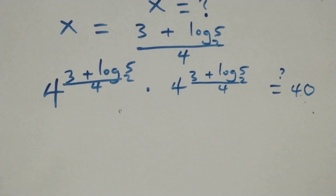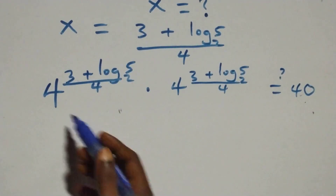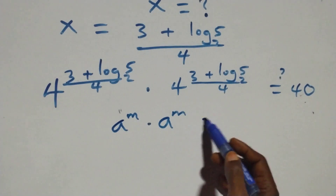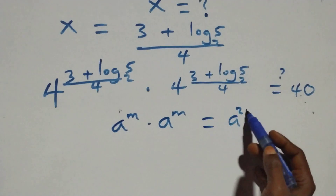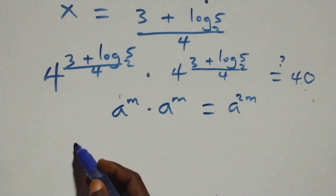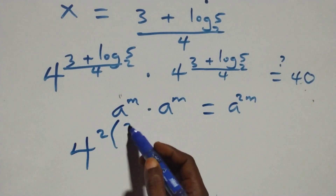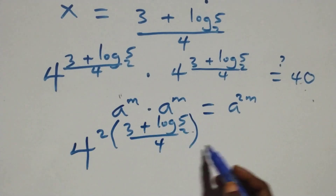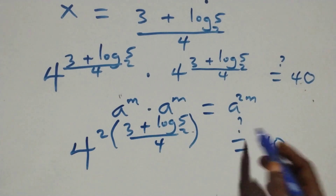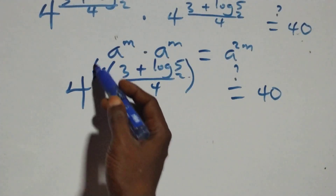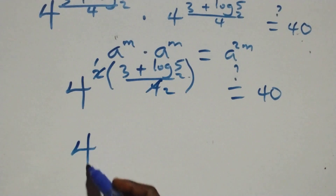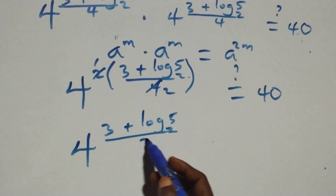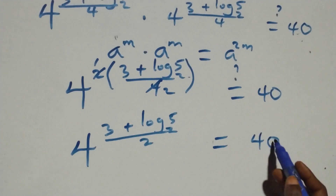Then here we can rewrite this. Same base multiplying: when we have a^m times a^m, this can be written as a^(m+m) = a^(2m). At this here, we have 4 raised to power 2 times (3 + log₂5)/4. This power multiplies: 2 and 4 give 2 in the denominator, and we have 4 raised to power (3 + log₂5)/2, which equals 40 on this side.